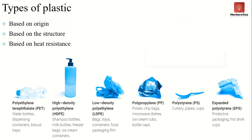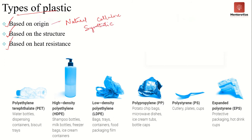We'll now briefly look at the different types of plastic. Based on origin, plastic can be classified as natural plastic such as cellulose, which is obtained from plants and animals and can be used for making cellotape, or synthetic plastic made by complex chemical processes in a factory or lab, such as nylon.